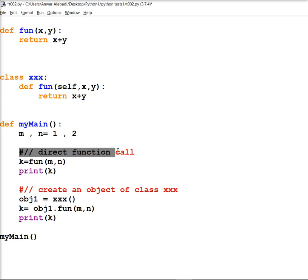And then we have the direct function call, which is k equals fun m and n. We have m and n: m equals 1 and n equals 2, and then we have 1 plus 2, so it is 3.